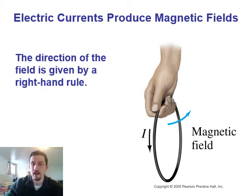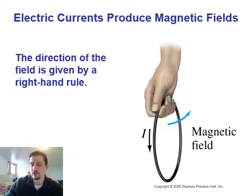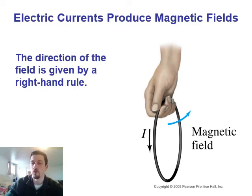Looking a bit more at currents producing magnetic fields — here you can see a loop, a circular wire with current flowing through it, and they're using the right-hand rule the same way we just explained. Their thumb is on the wire pointing in the direction of the current, and the way their fingers go shows which way the magnetic field is. Interesting for a loop like this is that no matter where you put your hand on the wire, the magnetic field is always going to be pointing through the loop in one direction, and going the opposite direction outside the loop.